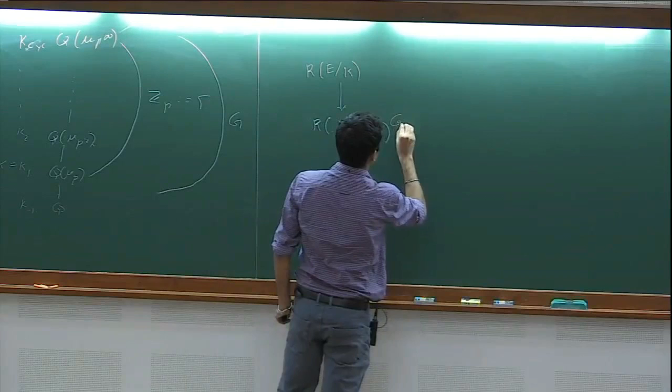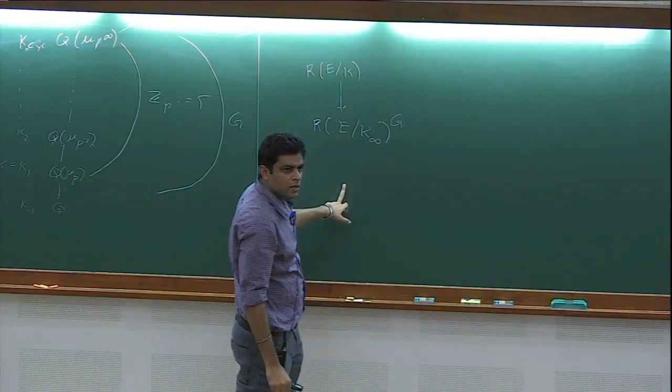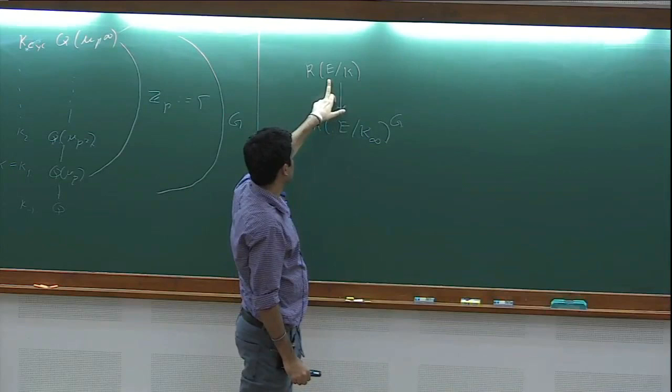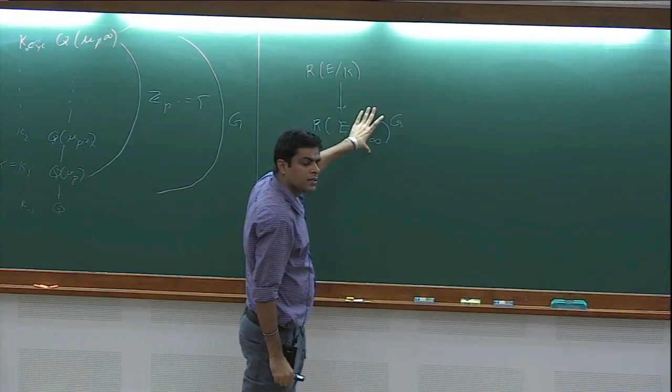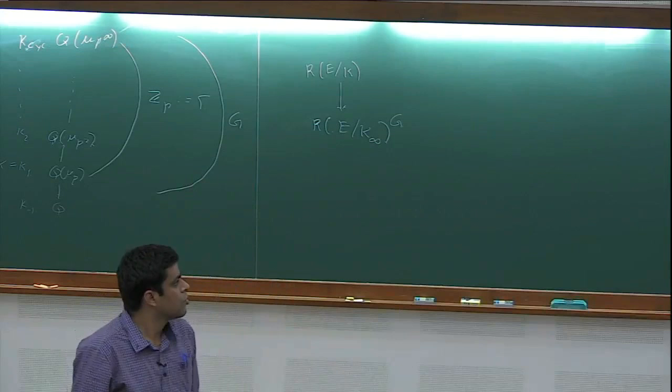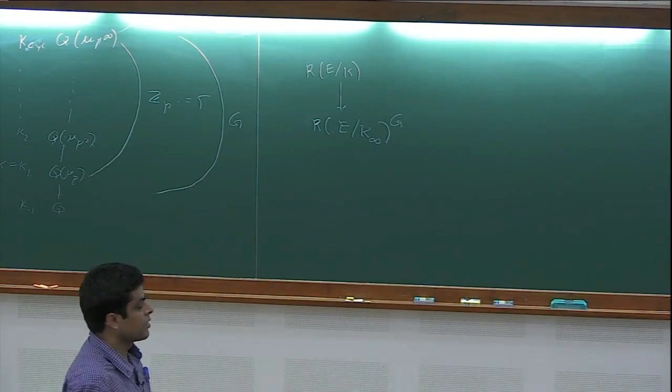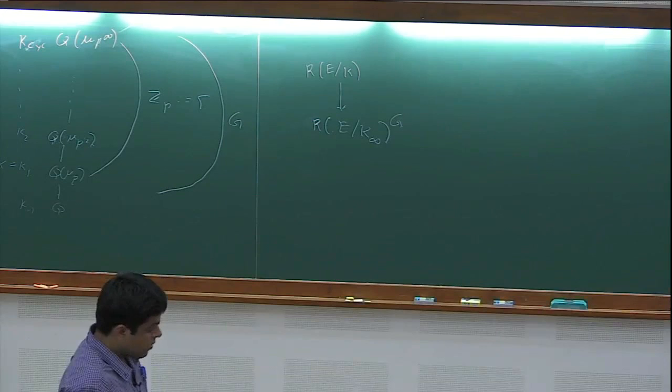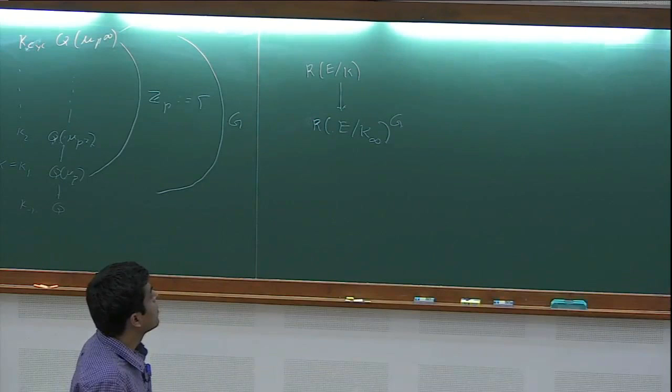One can show that the kernel and cokernel are actually cofinitely generated Z_P modules, and from class field theory one can show this is a cofinitely generated Z_P module. A topological version of Nakayama's lemma tells you that you can lift the generators — you do not need to assume it is finitely generated in the topological version. You can lift the generators to show these are cofinitely generated Λ(G) modules. The same thing happens for the Selmer group.